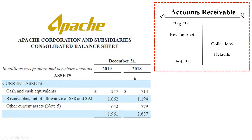Let me show you the t-accounts we're going to recreate. Accounts receivable is an asset account, so it has a beginning debit balance. When companies record revenue on account, they debit accounts receivable. When customers pay, they debit cash and credit accounts receivable — that's the collections entry. If customers don't pay, they default, and we write them off the accounts receivable balance, removing them from the list of customers who owe us money.